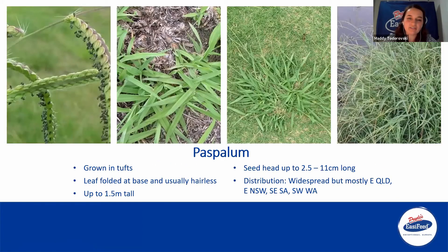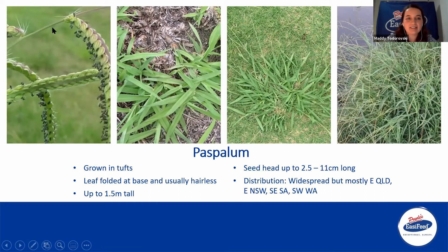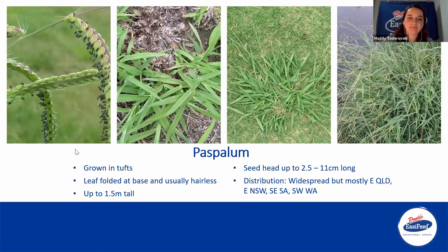Paspalum grows in tufts similar to buffel grass. The leaf is folded at the base, as you can see in the second picture. They grow up to 1.5 meters tall, and the seed heads are 2.5 to 11 centimeters long. Paspalum is widespread — mostly eastern Queensland, eastern New South Wales, and southeast South Australia and southwest Western Australia.